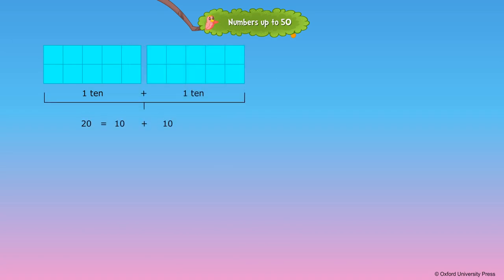1 ten and 1 ten makes 20. When 1 one is added to 2 tens, we get 21. Similarly, we keep on adding...